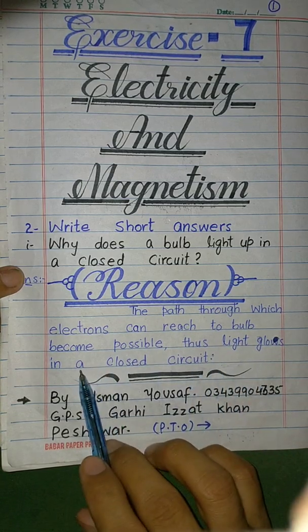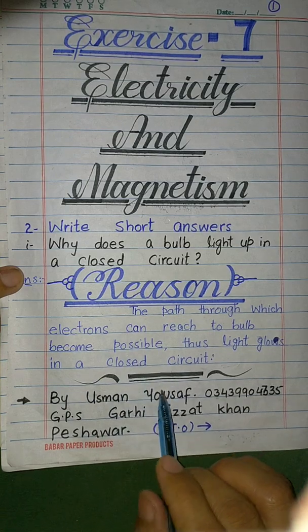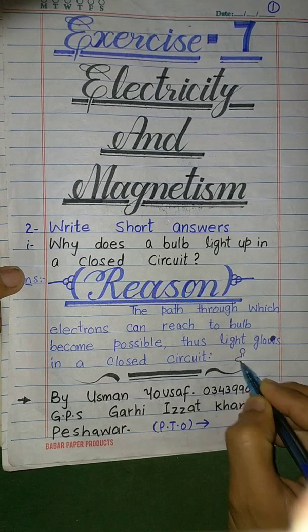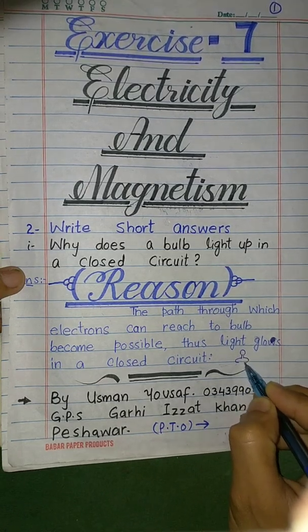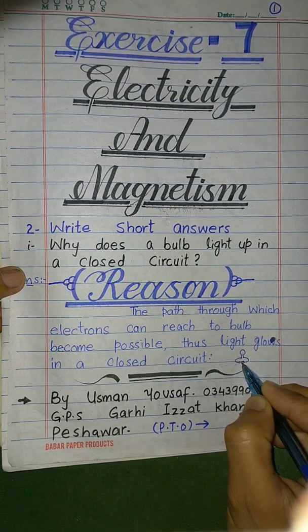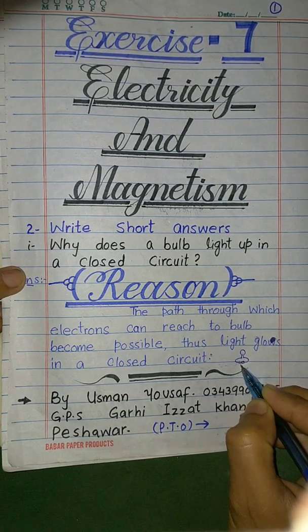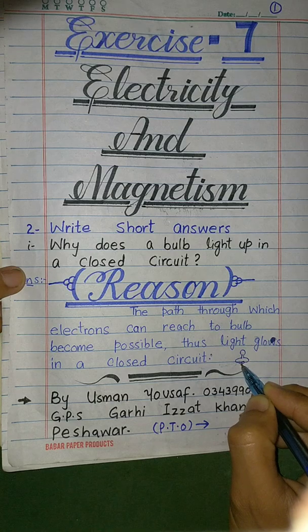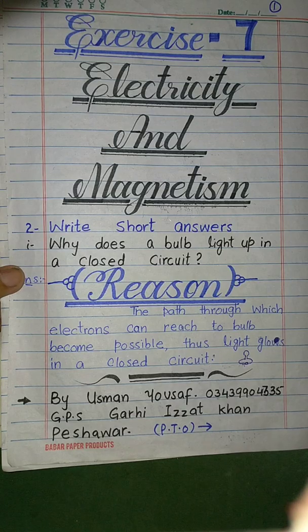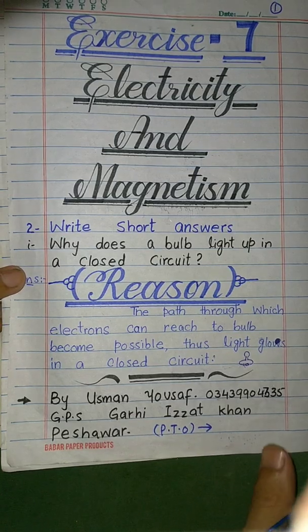In a closed circuit, if you press the button or switch, it completes the circuit. The electrons can then flow through the closed circuit to the bulb, making it light up. Opening the circuit stops the electron flow.